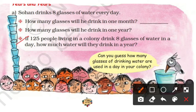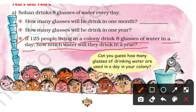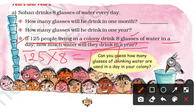If 125 people living in a colony drink 8 glasses of water in a day, how much water will they drink in 1 year? 125 people, 1 day mein total kitne glasses? 125 ko 8 se multiply karenge to 1 day ka answer aayega, then 1 year ke liye further multiply karenge.